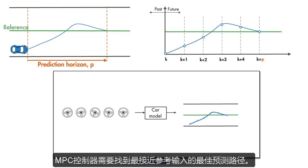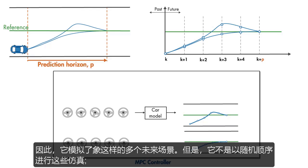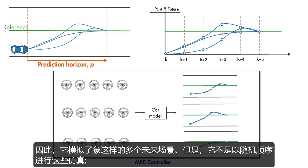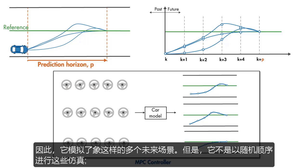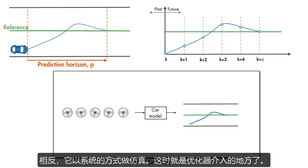The MPC controller needs to find the best predicted path that is the closest to the reference. So it simulates multiple future scenarios like this. However, it doesn't do these simulations in a random order. Instead, it does it in a systematic way. And this is where the optimizer comes into the picture.